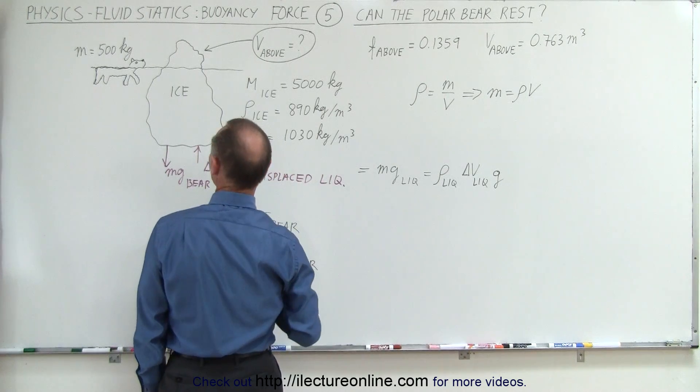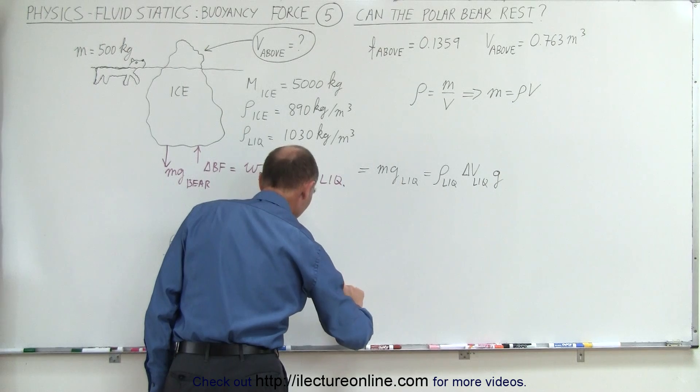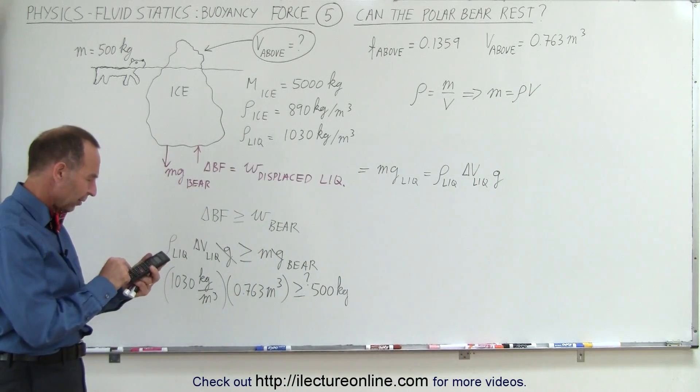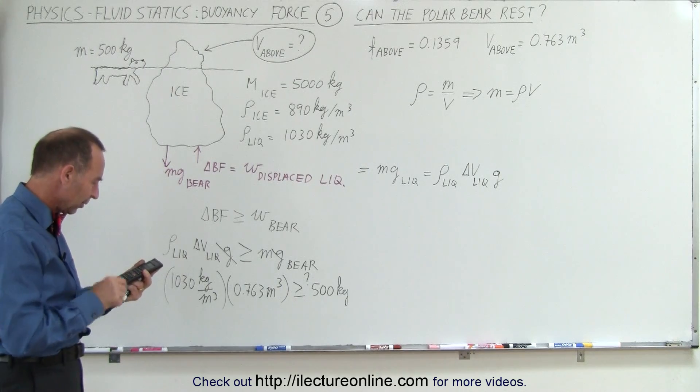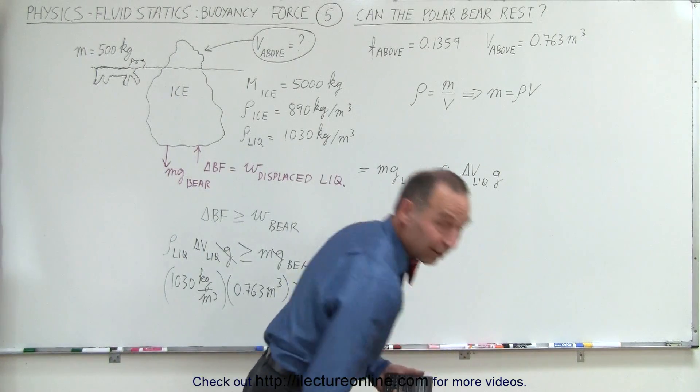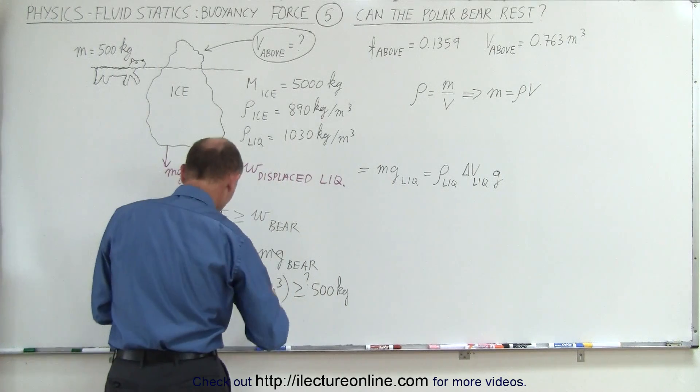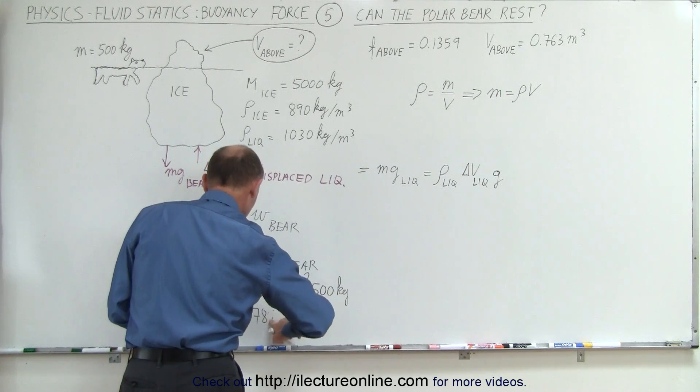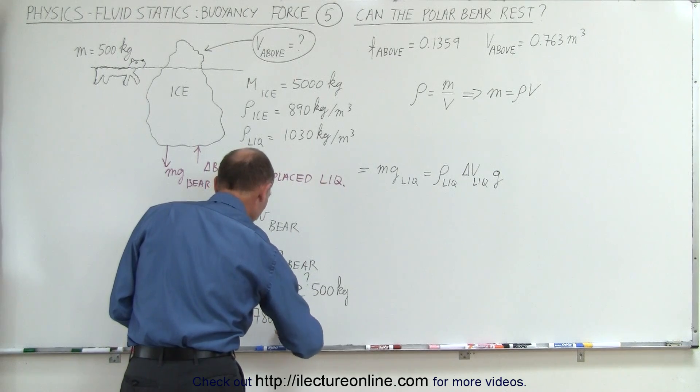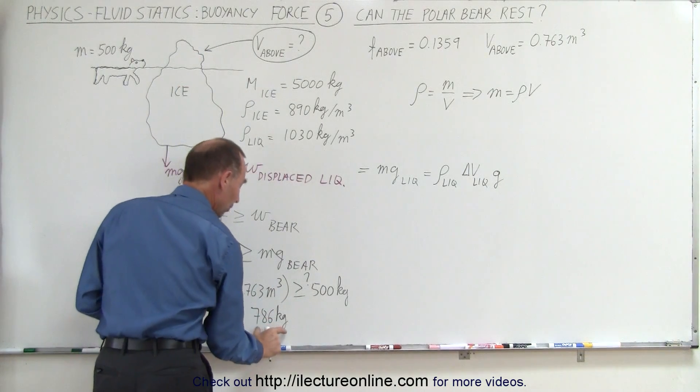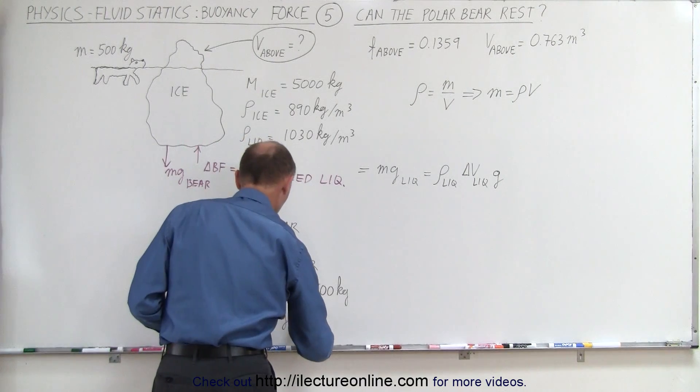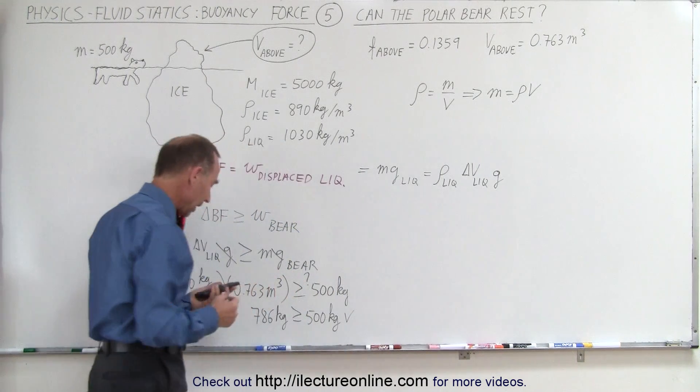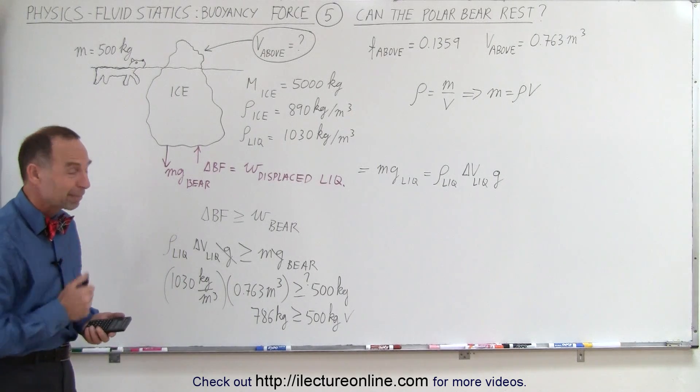And that has to be greater or equal to the mass of the bear, a mass of 500 kilograms. So that's the question: is it indeed greater? So let's find out with a calculator. 1030 times 0.763 equals, and it looks like it is. Lucky for the bear, the amount of ice that's left above the surface, 785.9, I'll make it 786 rounded off to the nearest kilogram. So the additional ice above the surface can support an additional 786 kilograms, which is greater than the weight of the bear, and therefore the bear can get on top, take a break before continuing on his swim. That's how it's done.